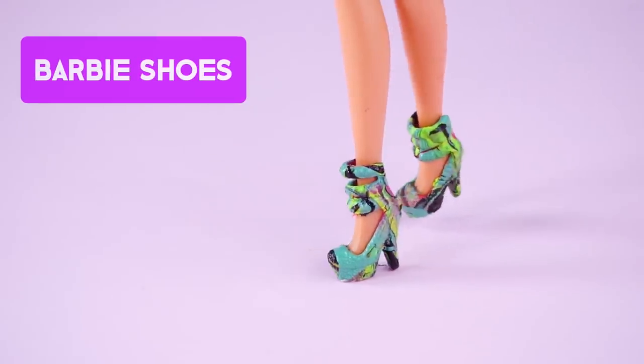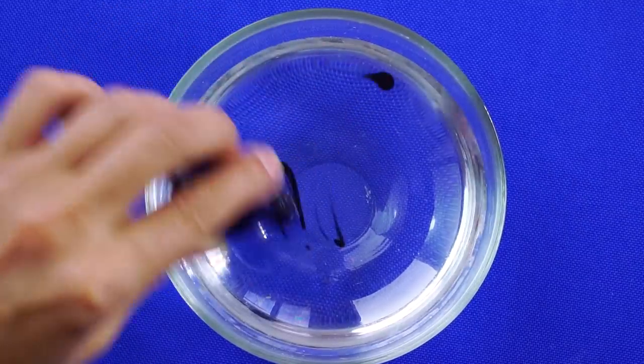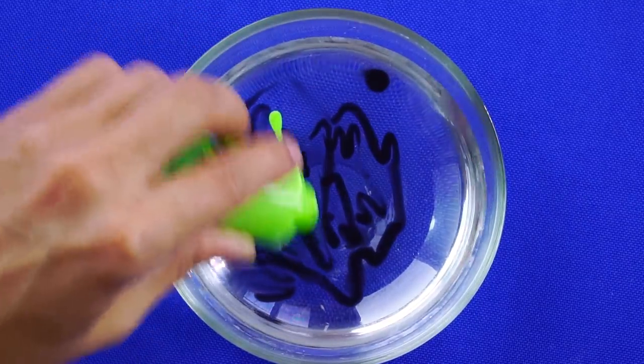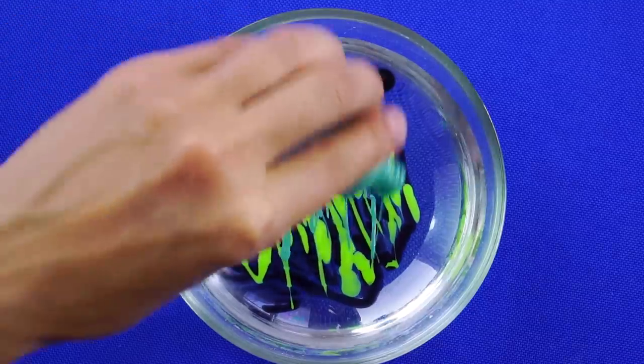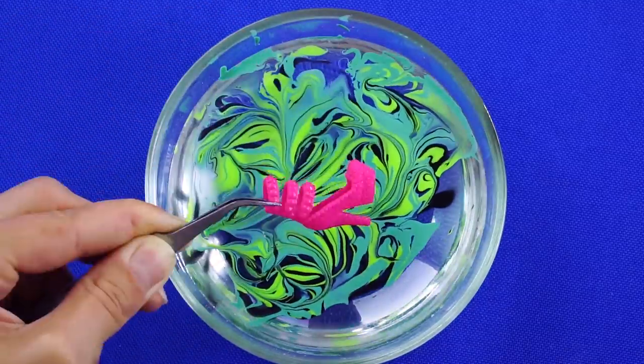Barbie Shoes. Ready to spruce up your favorite pair of shoes, Barbie? All you need is a bowl of water and some nail polish to put a funky spin on these plain shoes. Just drizzle the nail polish colors into the bowl in a cool design. Move the paint around with a toothpick to give it a swirled look.